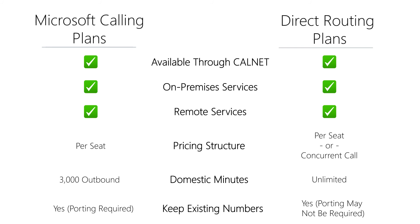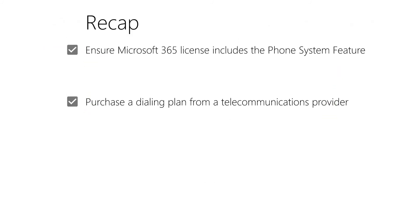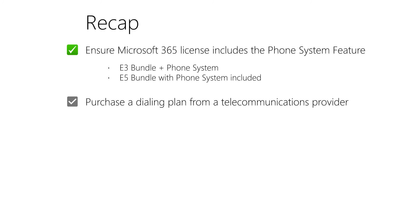In summary, to purchase VoIP integration for Microsoft Teams, you must first ensure that your Microsoft 365 license includes the phone system feature. This feature may be added to Microsoft's E3 bundle, but is already included in the E5 bundle. Additionally, you must purchase a dialing plan — either in the form of a Microsoft calling plan from a CalNet vendor, or a direct routing plan from a CalNet vendor. Obtaining these two components is one way to add VoIP integration to Microsoft Teams.